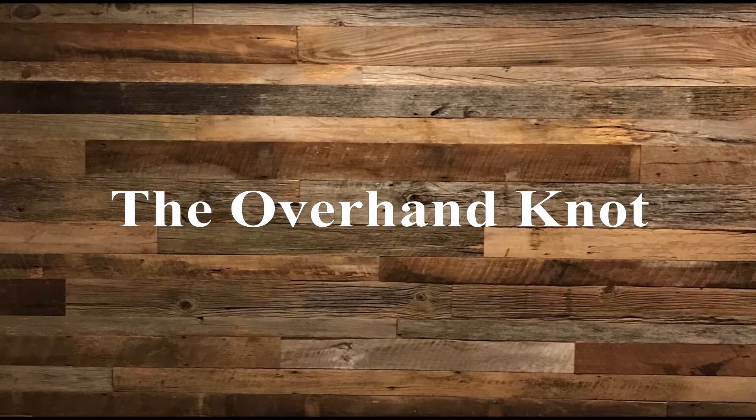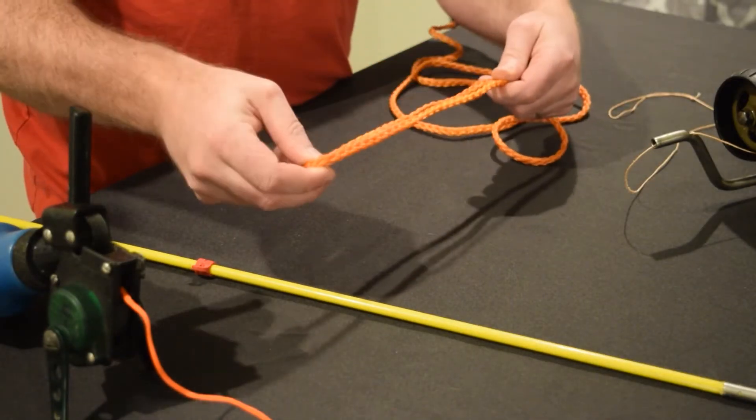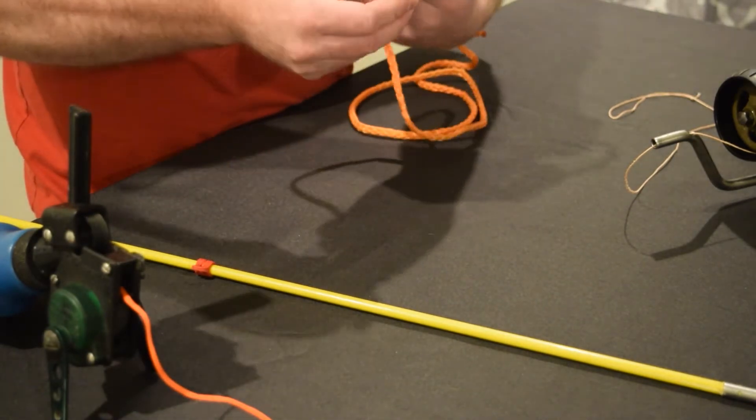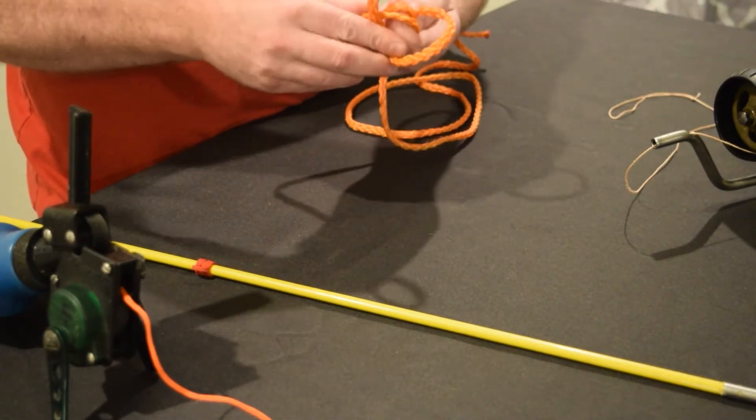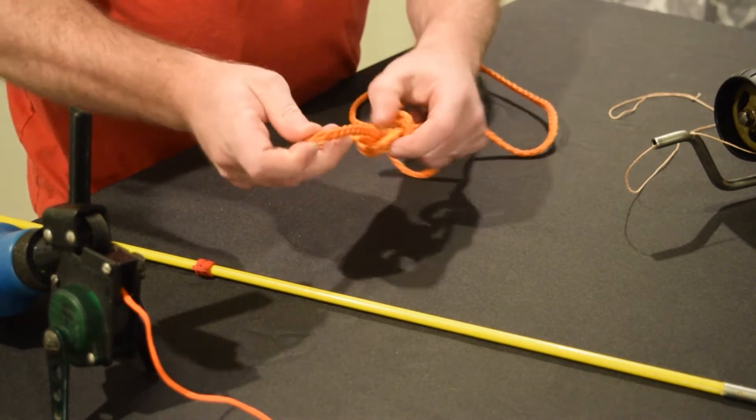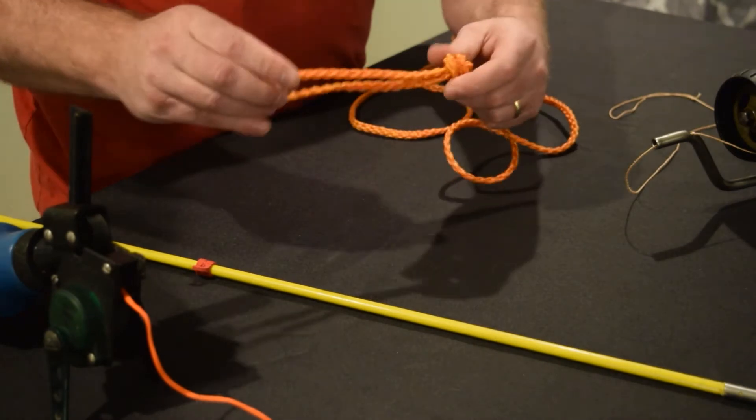And the knot you'll need to know is a basic overhand knot. Create a loop in one end of the line, then take a couple of fingers, wrap the loop around your fingers to make a hole, and then run the loop end through the hole and pull it tight.